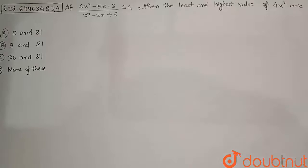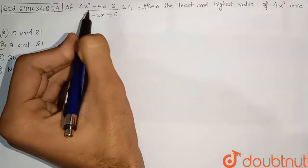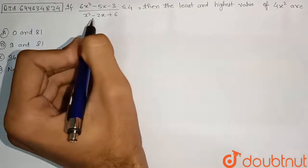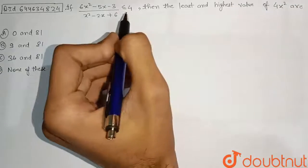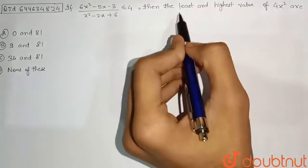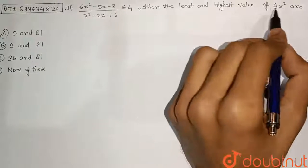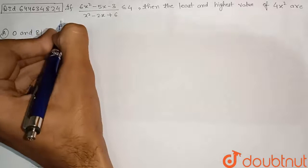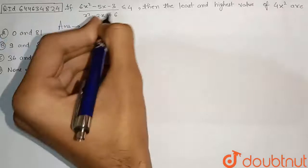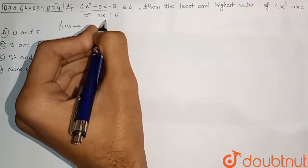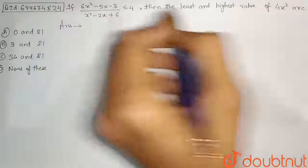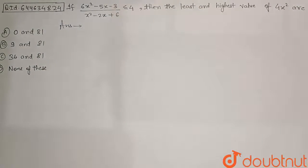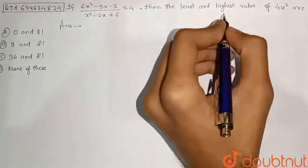Hello students, let's discuss the question. If (6x² - 5x - 3) / (x² - 2x + 6) is less than or equal to 4, then find the least and highest value of 4x². We will solve this inequality to get the range of x, and then choose the value of x for which 4x² is maximum or minimum.